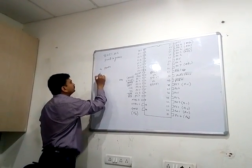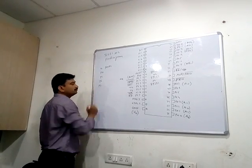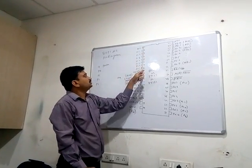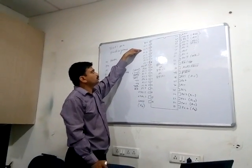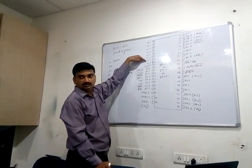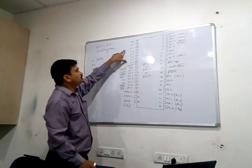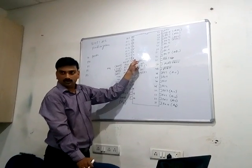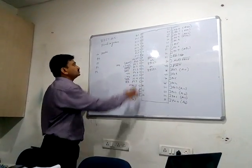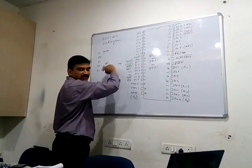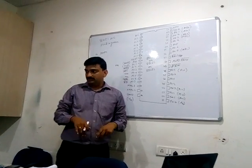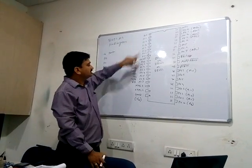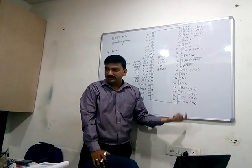Port 1 occupies pins 1 to 8 — that is P1.0, P1.1, P1.2, up to P1.7. This is an 8-bit port acquired from pin 1 to pin 8 of the 8051 microcontroller. It is used for parallel communication. If asked whether there is any parallel communication with these ports, the answer is yes — these are parallel ports used for parallel communication.